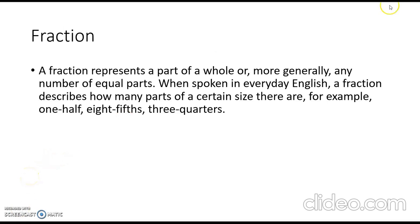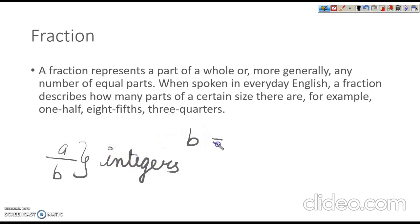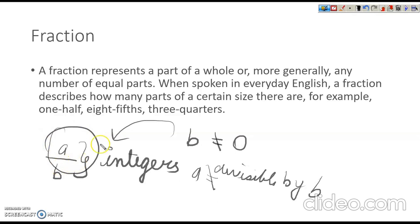Let's look at fractions. A fraction is a number A upon B, where A and B are integers, B is not equal to 0, and A is not divisible by B. If these properties apply, we can call this a fraction.